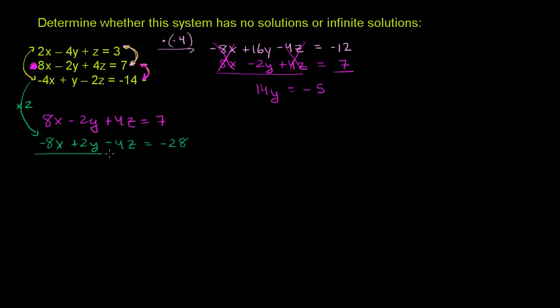Now we can add the left-hand sides and add the right-hand sides. These cancel out. Those cancel out. Those cancel out. We actually end up with nothing on the left-hand side. You get 0 plus 0 plus 0. And on the right-hand side, you get 7 plus negative 28 is negative 21.